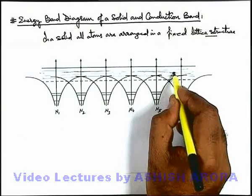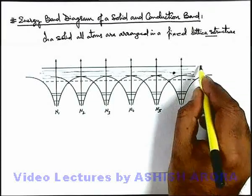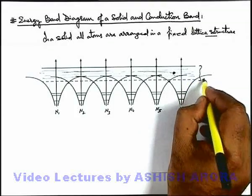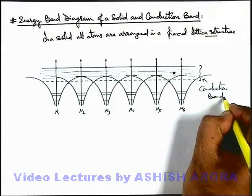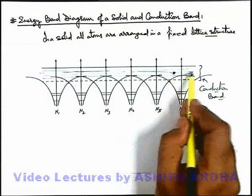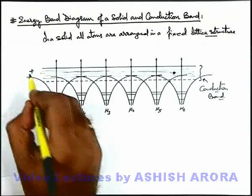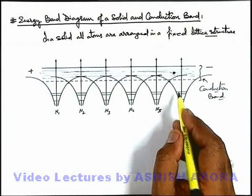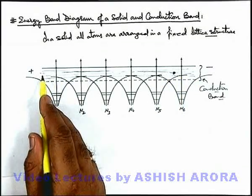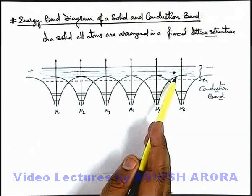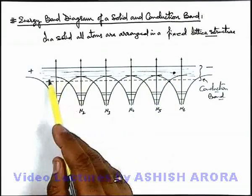An electron present in this zone can move in the whole lattice structure. This zone, in which all the orbitals are getting overlapped, we call the conduction band. This is called the conduction band because those electrons which are in this zone are free to move in the whole lattice. If a potential difference is applied across the lattice — a high potential and a low potential — electrons will start flowing from low potential to high potential. These electrons are called free electrons, and they contribute to the electric current which flows through a substance.